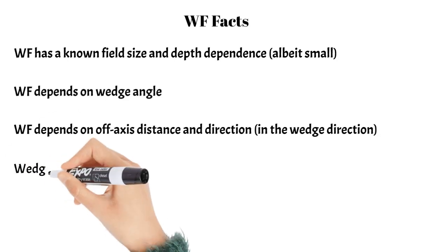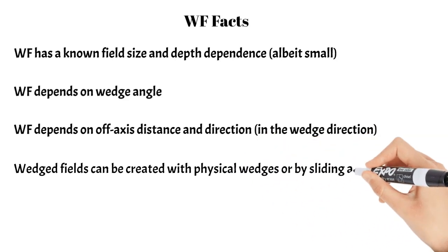Wedge fields can be created with physical wedges or by sliding a jaw across the field. Physical wedges are placed in the beam and completely change the photon spectrum and the shape of the dose distribution in the phantom or patient. You can also create the same effect by sliding a jaw across the field, which is more advantageous because it's not a completely different spectrum beam.